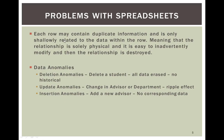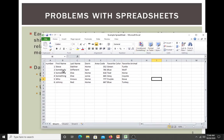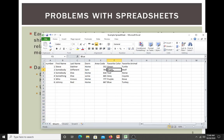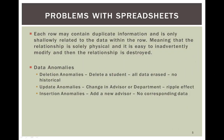Each row may contain duplicate information. Looking at the columns, we have three 'home' values, two 'blue' entries in favorite color — so we have redundant data. The relationship in a spreadsheet is solely physical, and it is very easy to distort and lose that relationship. That's probably one of the biggest inherent disadvantages of using a spreadsheet, along with the difficulty of making effective use of large amounts of data.